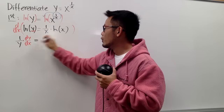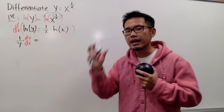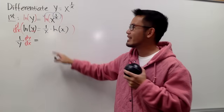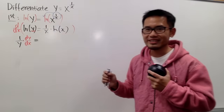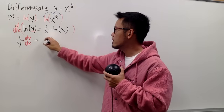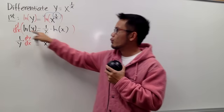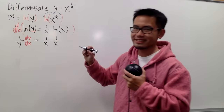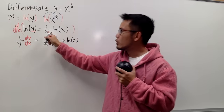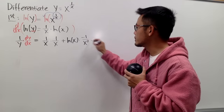Moving to the right-hand side: we have 1 over x times ln x. I prefer to do the product rule here. I will look at 1 over x as the first function and ln x as the second. The version of the product rule I'm using: keep the first function, 1 over x, and multiply by the derivative of the second. The derivative of ln x with respect to x is 1 over x. Then add the second function, ln x, and multiply by the derivative of the first. The derivative of 1 over x is negative 1 over x squared.